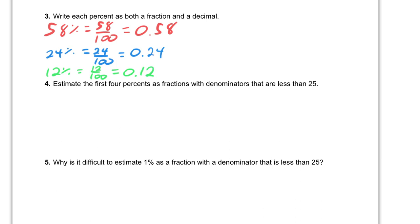Okay, then we had, I believe it was 5%. 5% is the same as 5 out of 100, which is the same as 0.05. And finally, we had 1%, which is 1 out of 100, and is the same as 0.01.